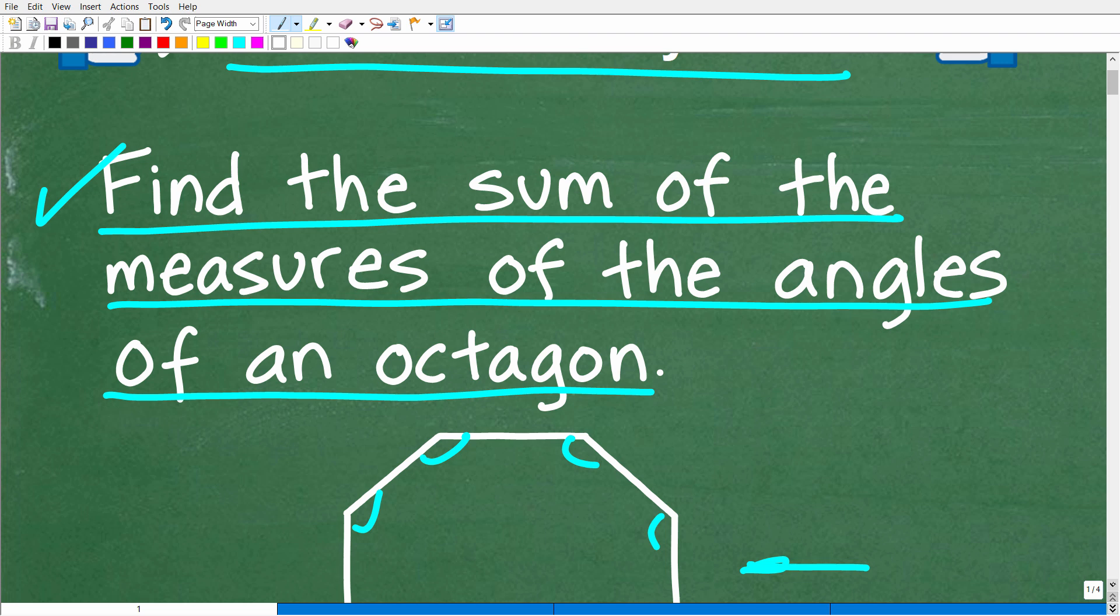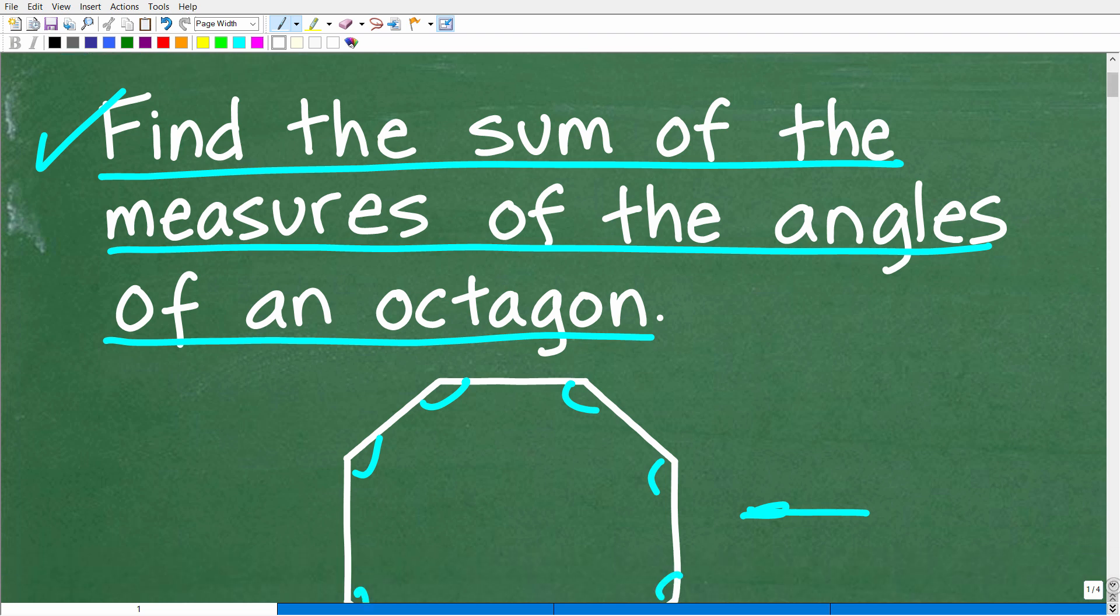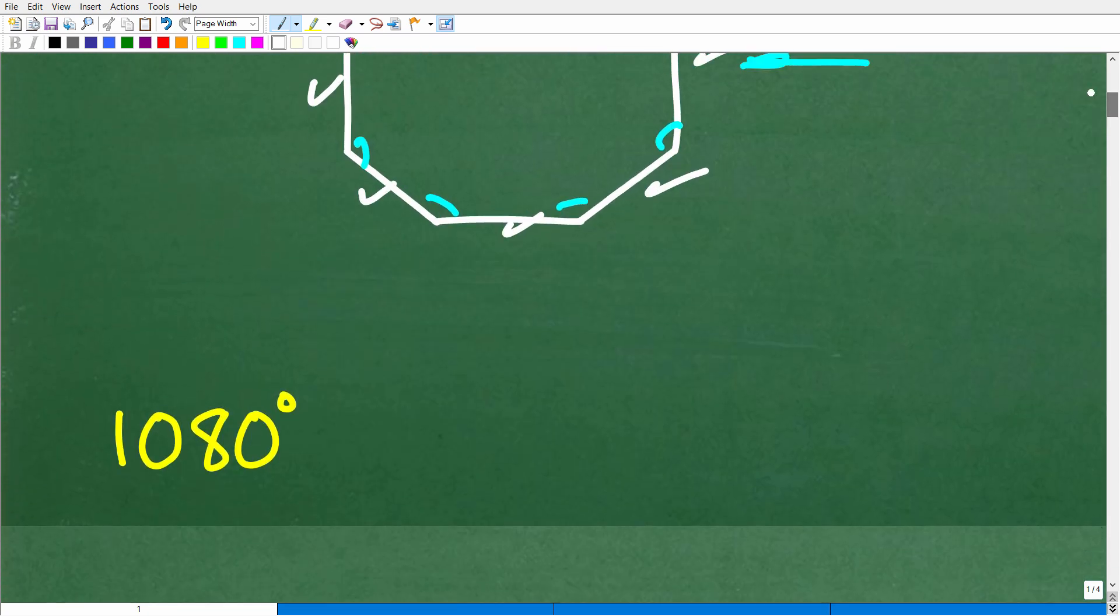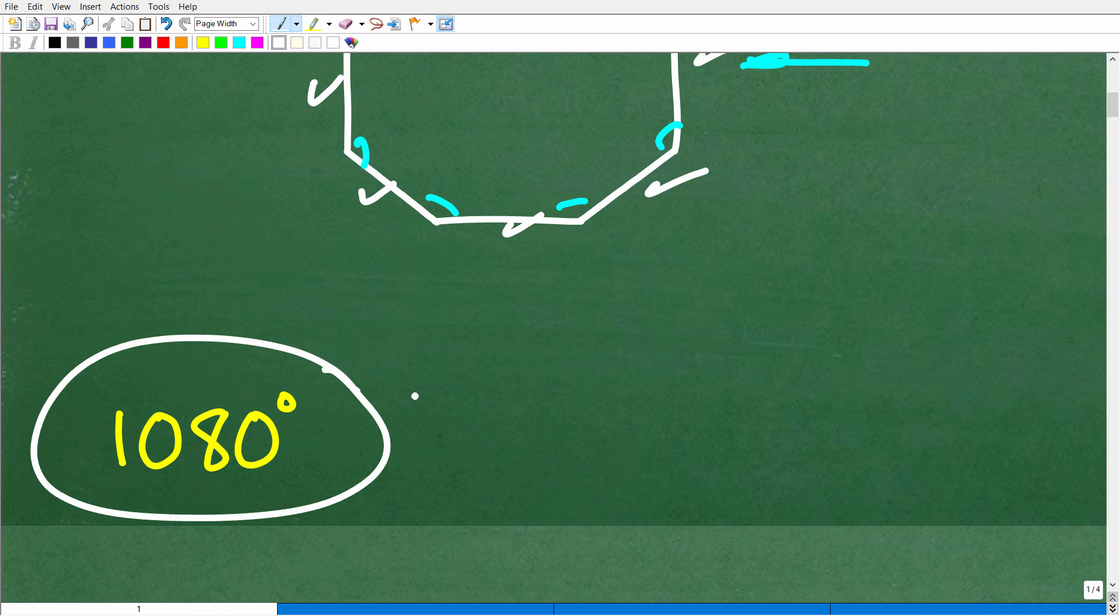So again, we're looking for the sum of the measures of the interior angles of an octagon. This is what an octagon looks like. We're dealing with one, two, three, four, five, six, seven, eight sides. So it's an eight-sided polygon. Now let's go ahead and take a look at the answer. Again, there is a formula, and if you don't have that formula, if you didn't figure this answer out, don't feel bad. But if you were able to, this is the correct answer.